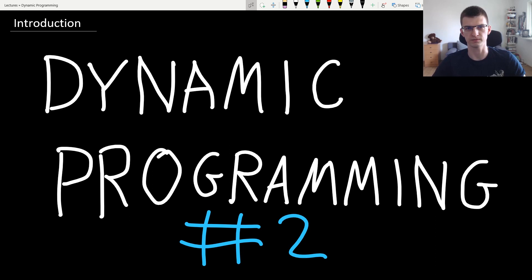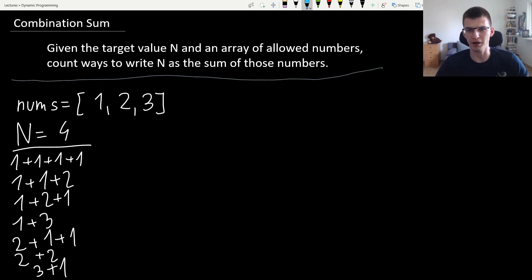The first problem is combination sum. We are given the target value n and some allowed numbers. We are asked to count ways to write n as the sum of those numbers. We allow repetitions and the order also matters. For example, if the target value is 4 and the allowed numbers are 1, 2 and 3, some possibility is 1 plus 1 plus 2, which equals 4, but also 1 plus 2 plus 1, which is also 4. All the ways are written here and there are 7 of them, so the answer is 7.